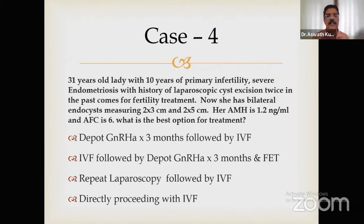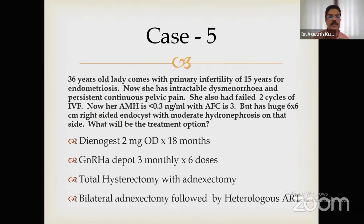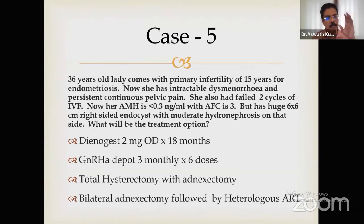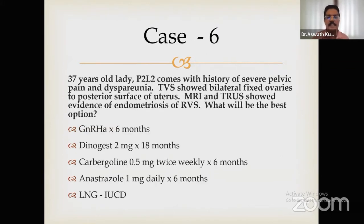Case 4: A 31-year-old woman with 10 years of primary severe endometriosis, two prior laparoscopies, bilateral endometriomas, and very low AMH. IVF was planned with three months of depot GnRH agonist followed by embryo transfer. Case 5: AMH was very low, two prior surgeries, huge bilateral endometriomas with hydronephrosis, severe pain, and desire for baby — a very tricky situation. Bilateral adnexectomy was performed followed by heterologous (donor egg) ART, and the patient had a baby.